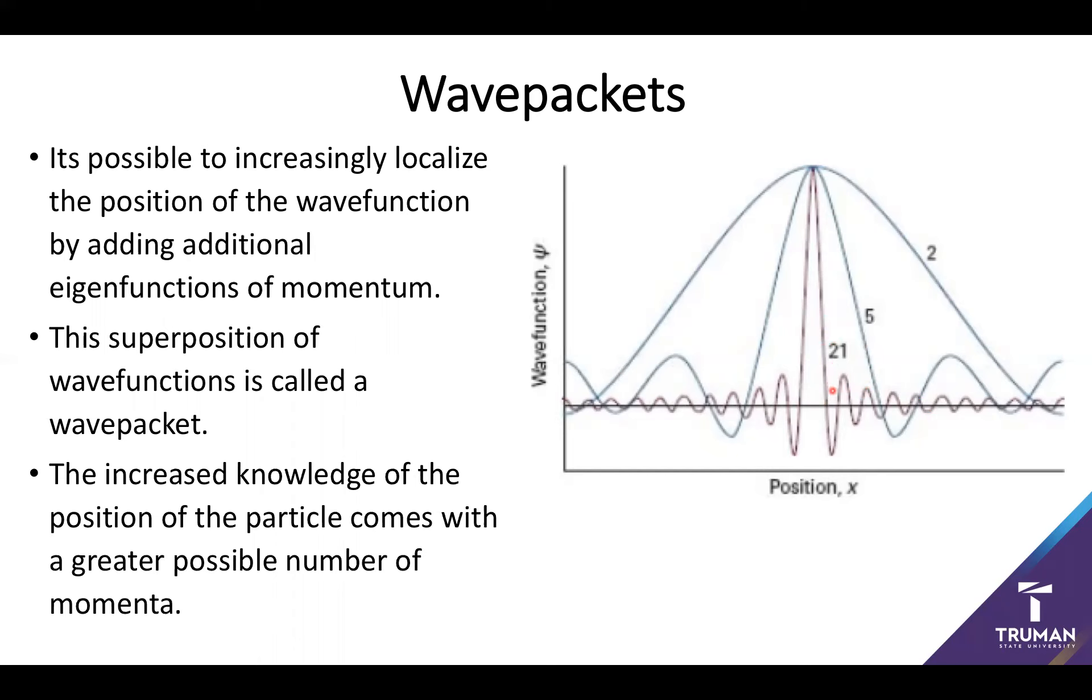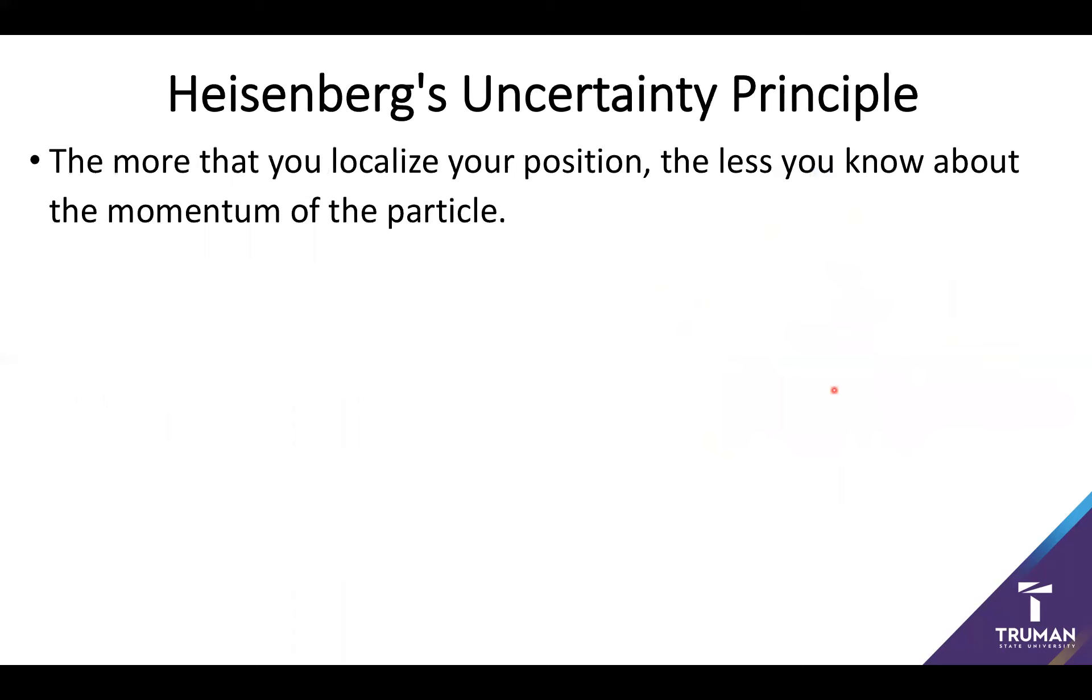If I've got 21 eigenfunctions of momentum that means that my particle can have one of 21 different momenta, which means I know very little about the actual momenta of the particle. And this gives us a general rule which is really the underpinning of Heisenberg's. And this is the idea the more I localize a position, so the more wave functions I'm going to need in my wave packet or my superposition, by that very nature I'm going to know less and less about the momentum. So this can be quite a problematic arrangement. And this relationship is often expressed via the Heisenberg uncertainty principle.